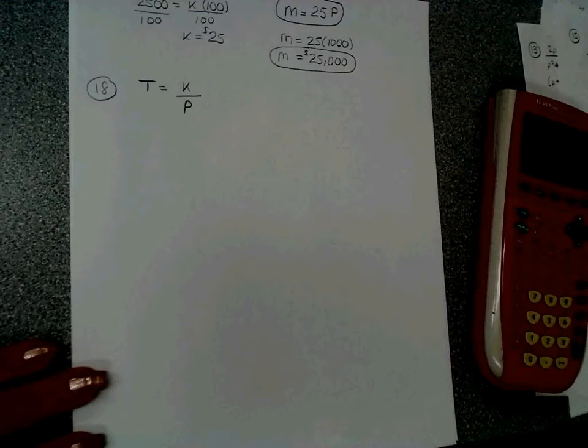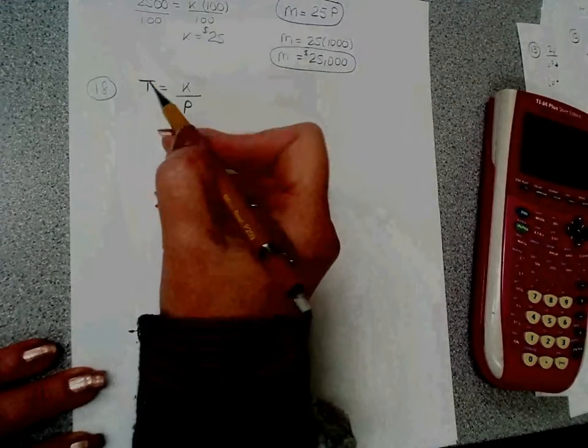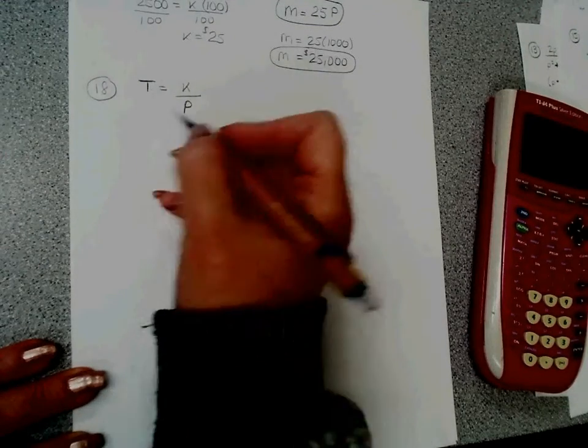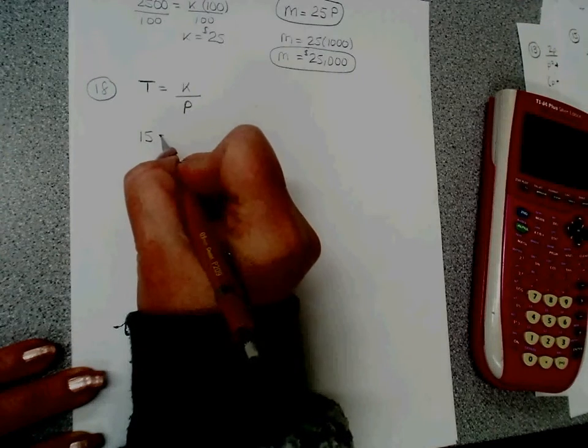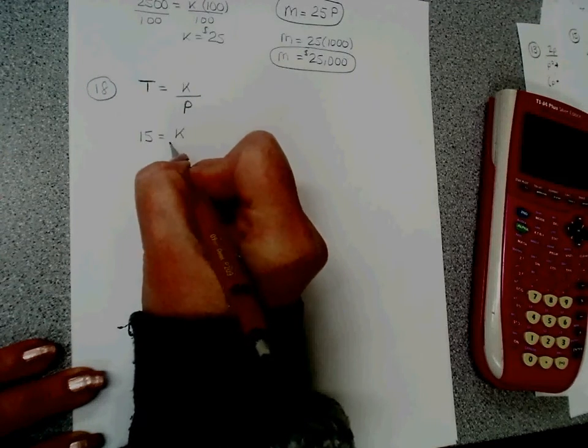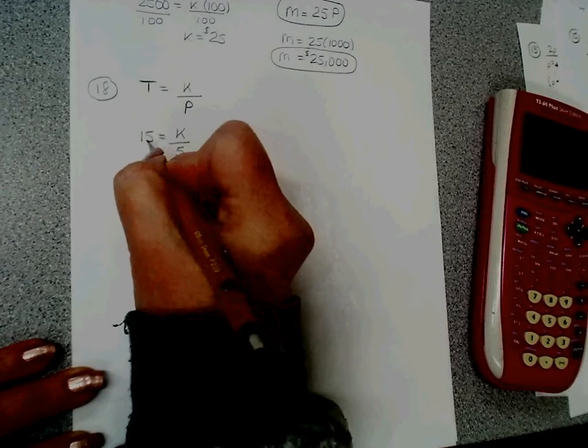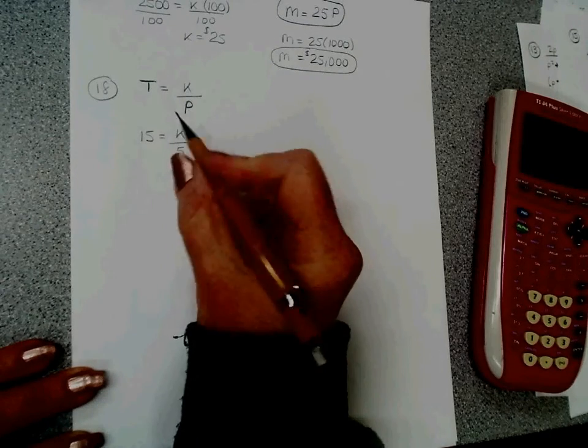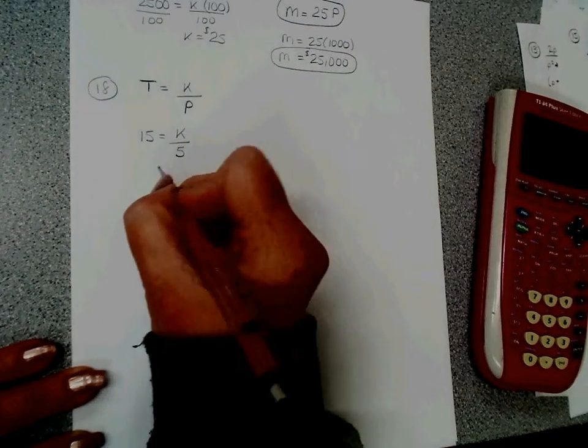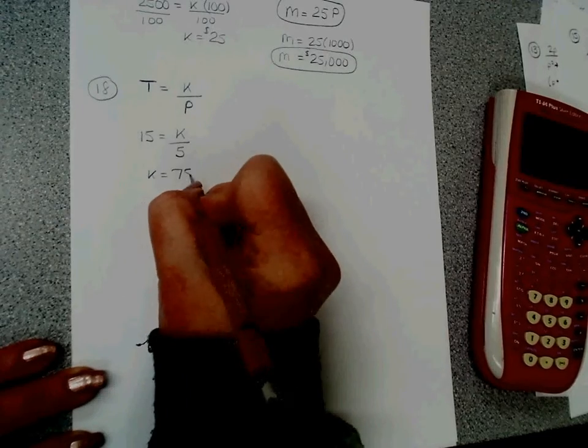He can afford 15 tickets that cost $5 each. So t was 15 and p was 5. So 15, to solve that I multiply this side by 5 and that side by 5, so k equals 75.